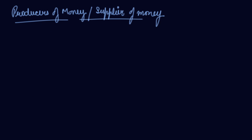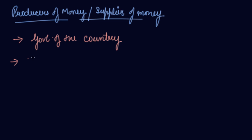We have the producers of money or the suppliers of money. In economics, producers of money and suppliers of money are considered the same thing. The producers or suppliers of money are: first, the government of the country, and second, the banking system of the country, including both the central bank and the commercial banks.